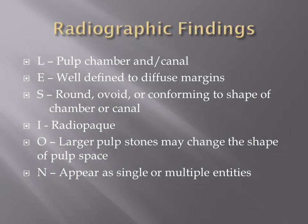When radiographically diagnosing pulp stones using the LESION acronym: the location is within the pulp chamber and canal of any tooth, most prevalent in the maxillary molars. The edge is well-defined to diffuse margins. The shape is round, ovaloid, or conforming to the shape of the chamber or canal. The internal structure is radiopacity of dentin.